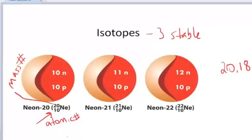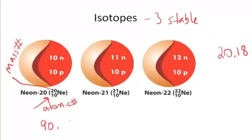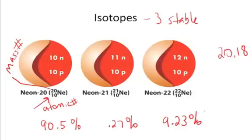I would collect—neon-20 is the dominant isotope—90.5% of the neon sample would be neon-20, 0.27% would be neon-21, and 9.23% would be neon-22.